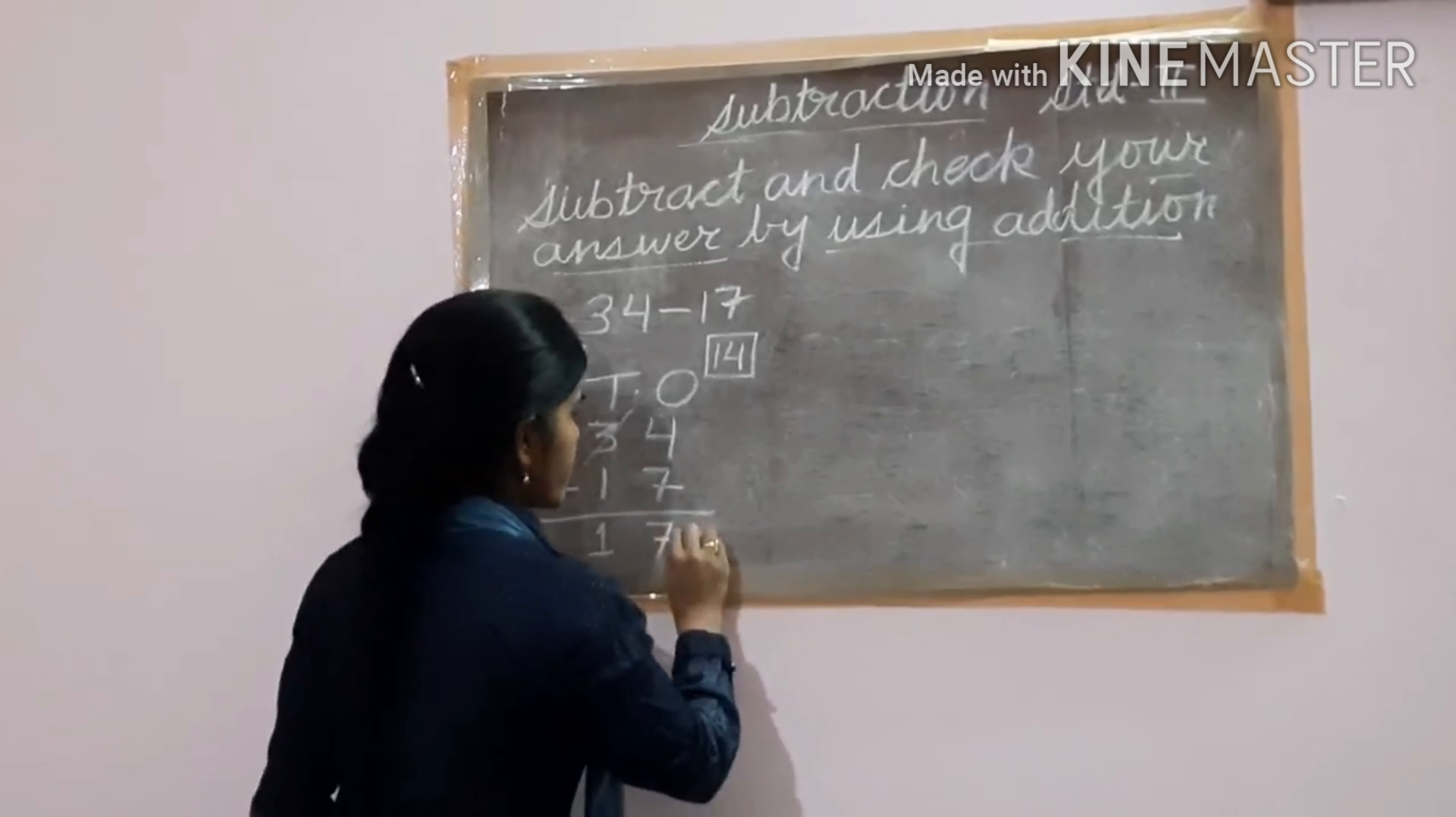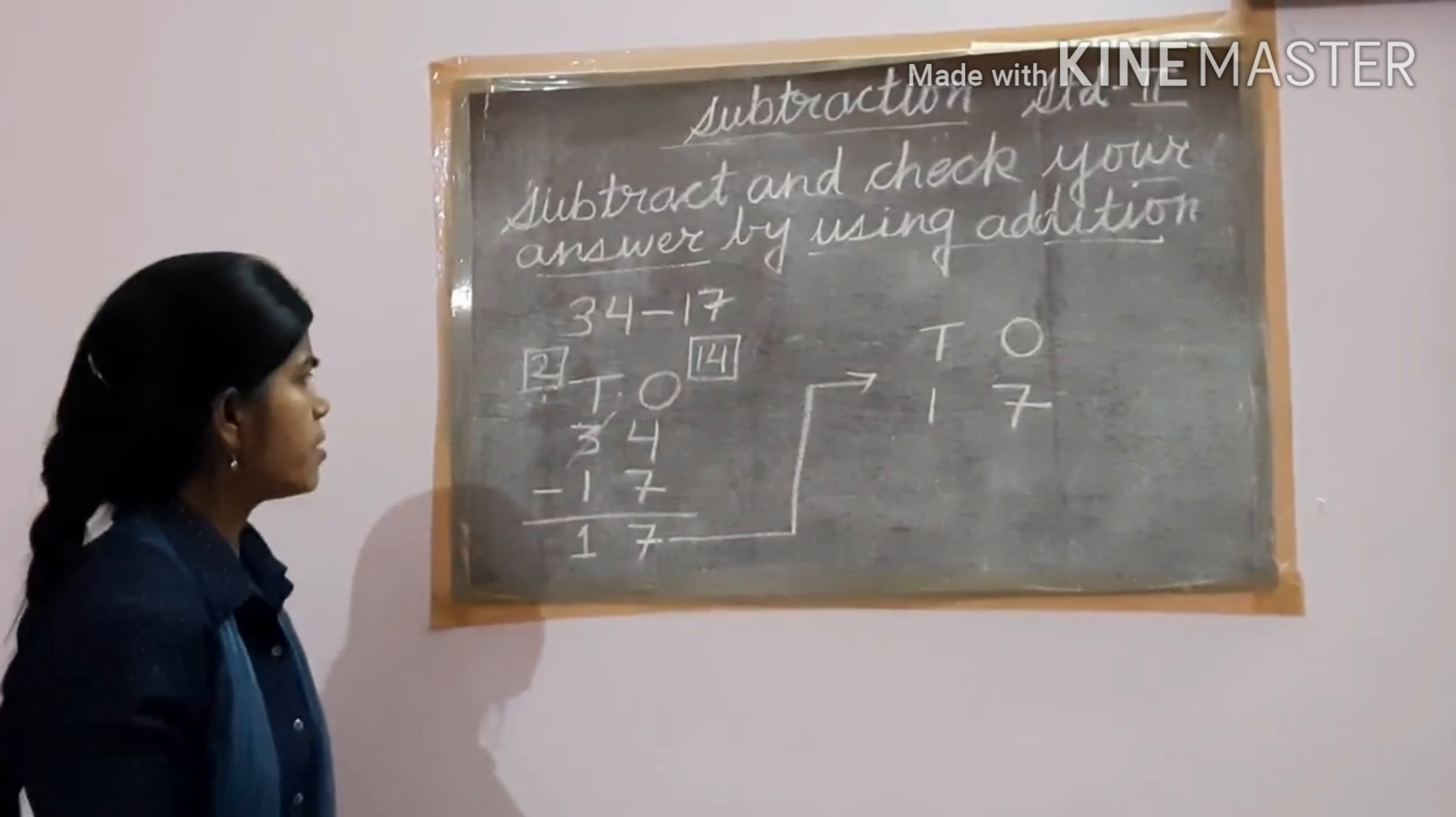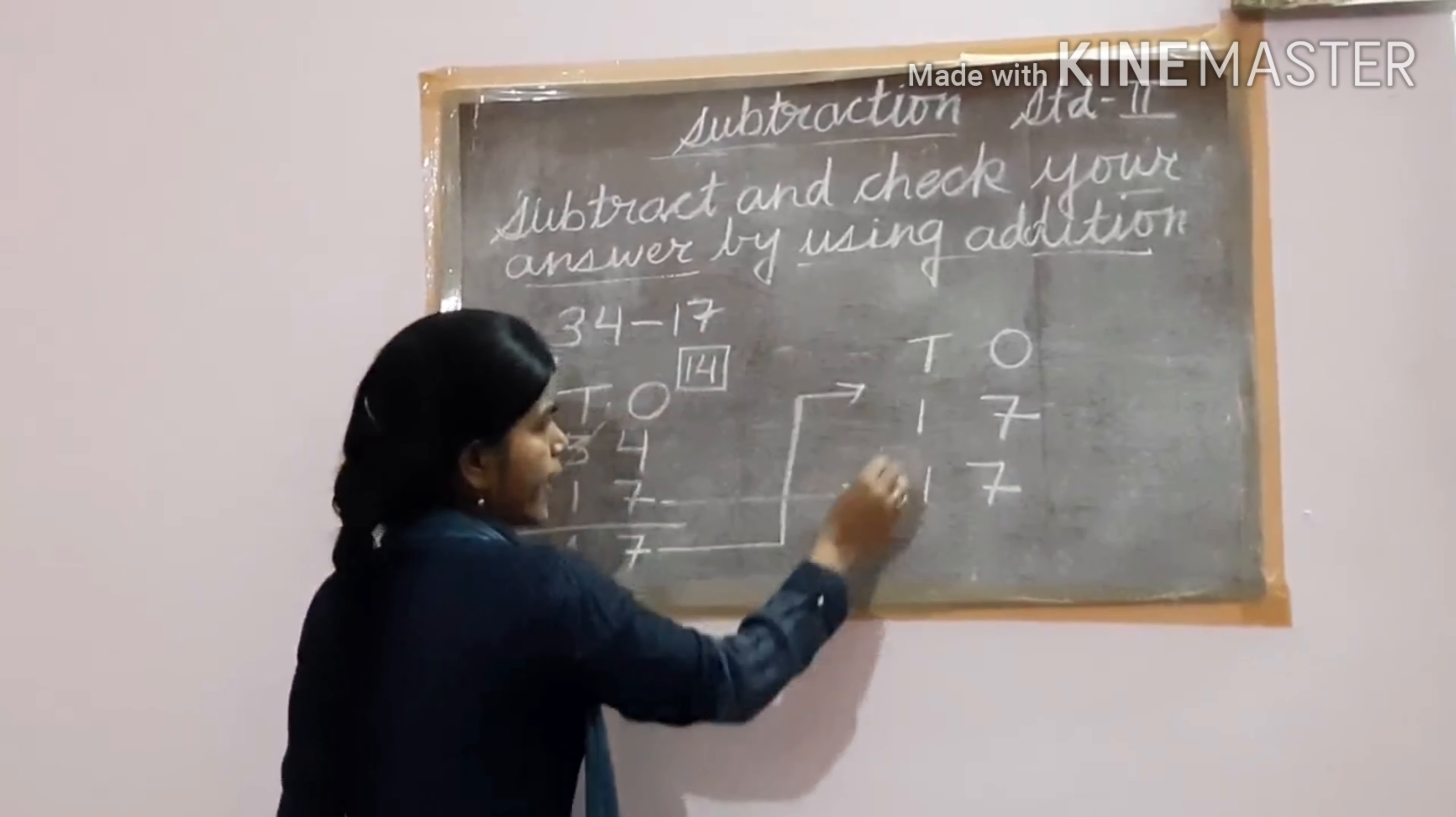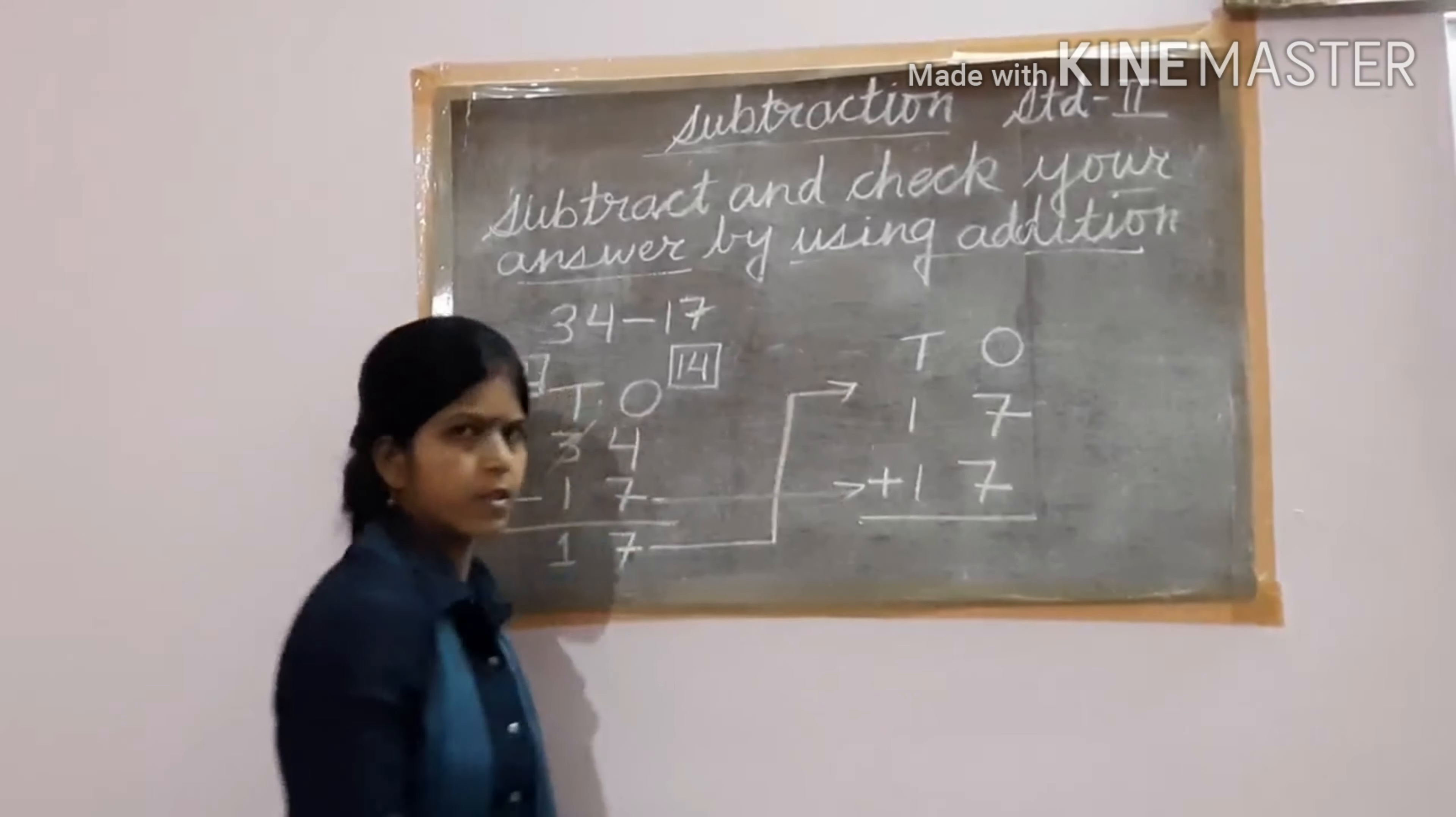What you have to do? You have to write this 17 up. Again you mention the place, tens and ones. This 17: 1 ten, 7 ones. And how many numbers you have subtracted? You have to write at same place. This number will come here only: 17. And here you are going to check by using addition, so plus sign. Now addition you have learnt. I am repeating here. 7 ones and 7 ones, you have to add.